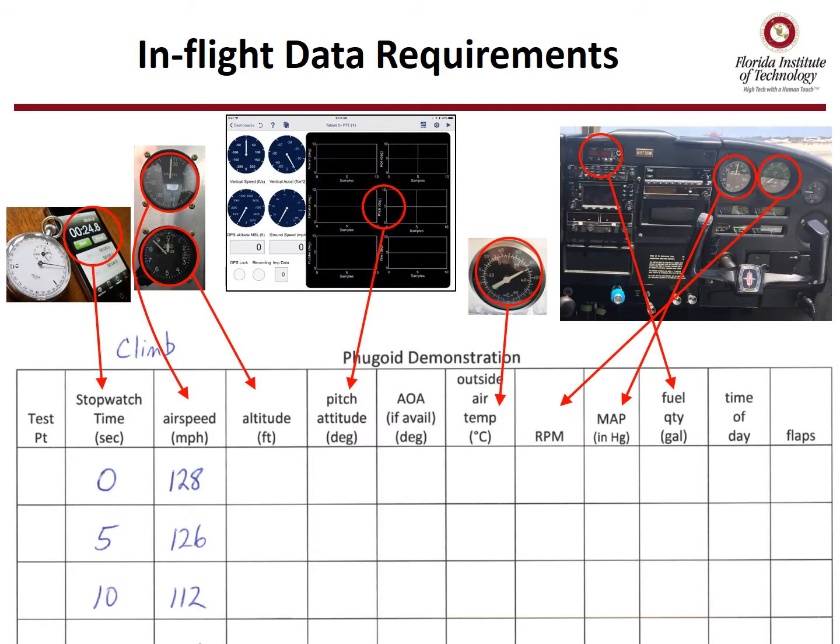In-flight data for this lab includes time from a stopwatch and airspeed from the second or third row airspeed indicator. The rest of the data is really optional, but you can record it off the tablet, the outside air temperature gauge, and the co-pilot engine instruments.